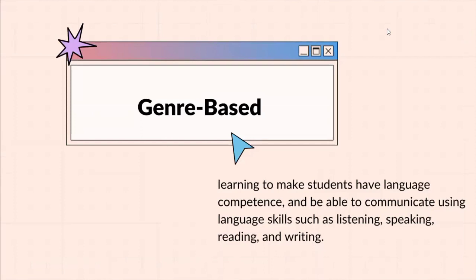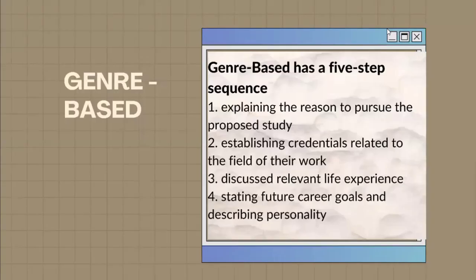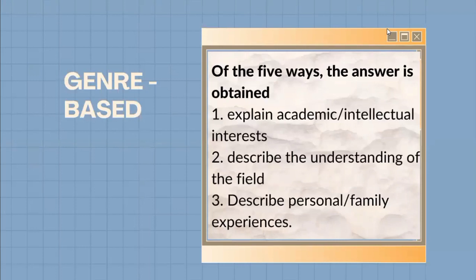Now we are going on to the genre-based approach. Learning aims to make students have language competence and be able to communicate using language skills such as listening, speaking, reading, and writing. Genre-based has five app sequences. First, explaining the reason to pursue the proposed study. Second, establishing credentials related to the field of their work. Third, discussing relevant life experience. And the last, stating future career goals and describing personality. Of the five ways, answers are obtained by: first, explaining academic or intellectual interest; second, describing the understanding of the field; and the last, describing personal or family experience.